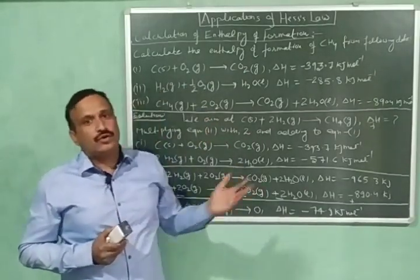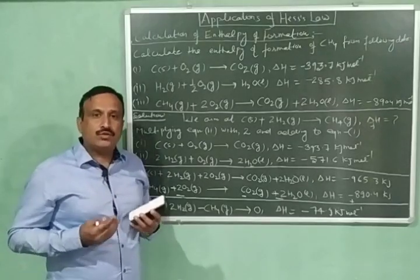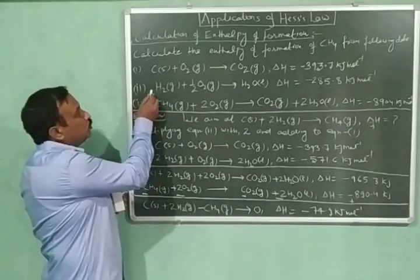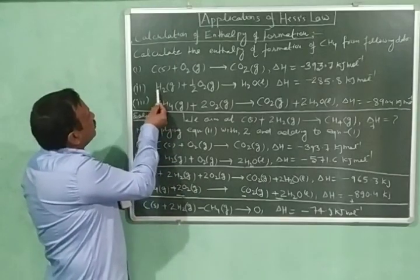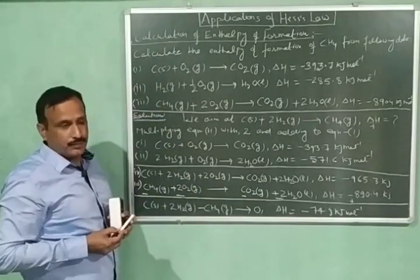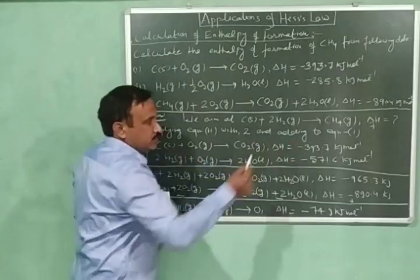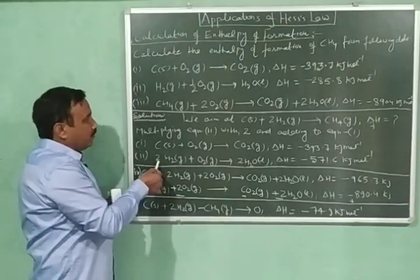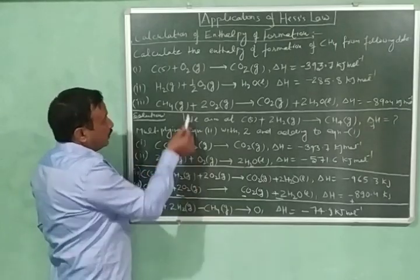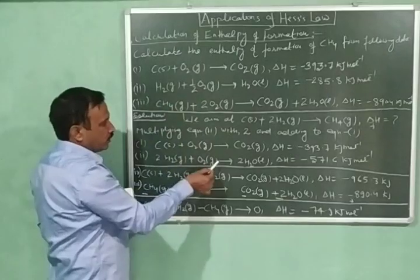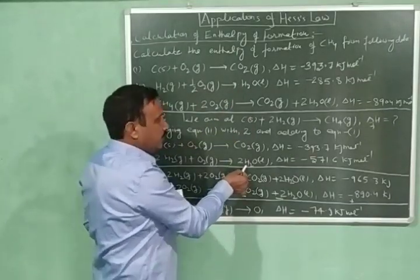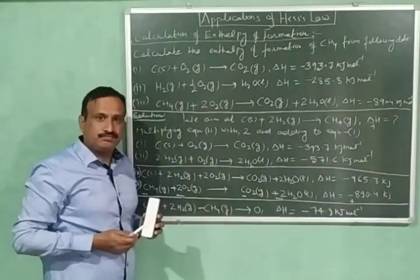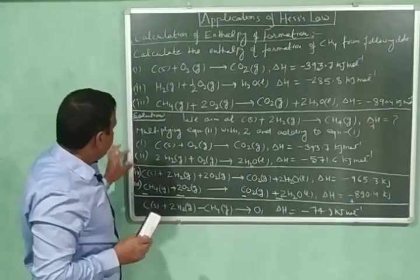Now let us calculate the enthalpy of formation of methane using these three equations. For the calculation, we will multiply equation number two by two, and then add that result to equation number one. I have written equation number one as such, and multiplied equation number two by two throughout. After multiplication, we have two moles of hydrogen and one mole of oxygen giving two moles of water, and the enthalpy change is also multiplied by two.